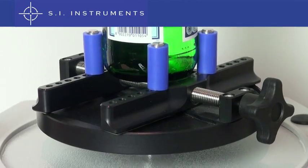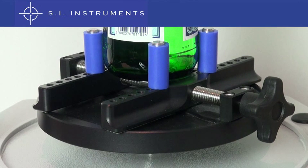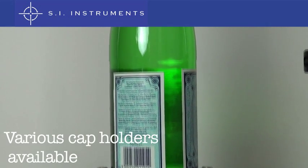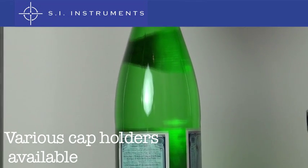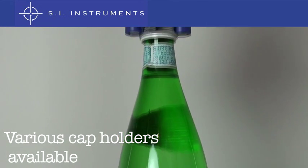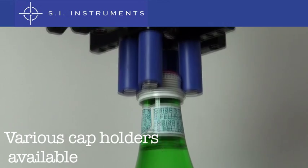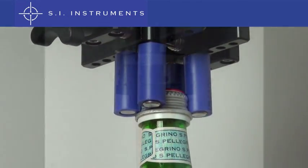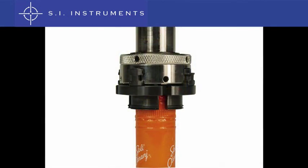On top of the motor is the bottle holder for varying sizes of bottles. On top of the bottle is the cap holder, in this case the variable cap holder for different cap sizes. Other cap holders are available.